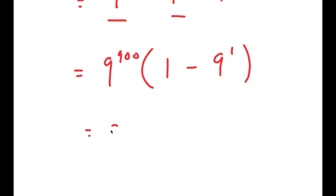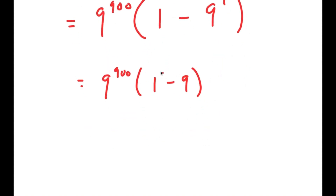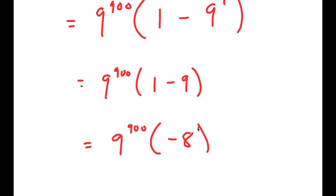This is equal to 9^900 times (1 minus 9), because 9^1 is the same thing as 9. Now 1 minus 9 is equal to negative 8, so I get 9^900 times negative 8.